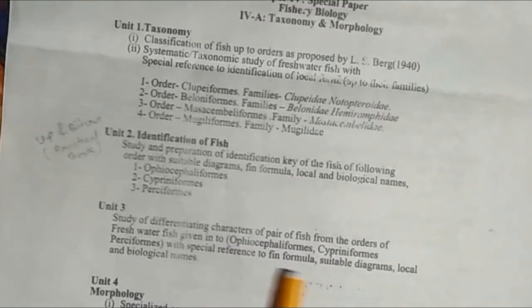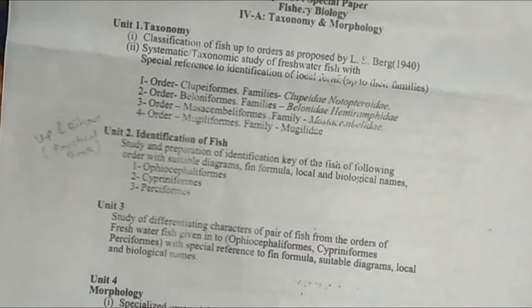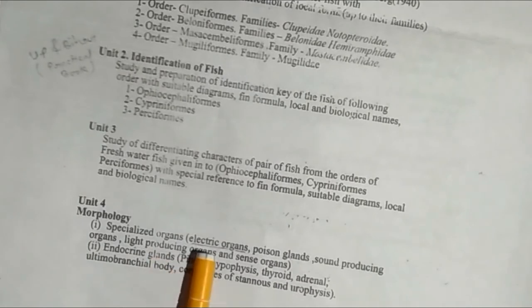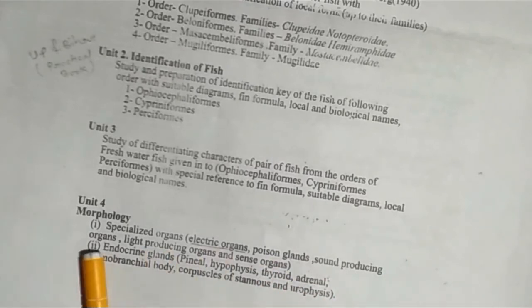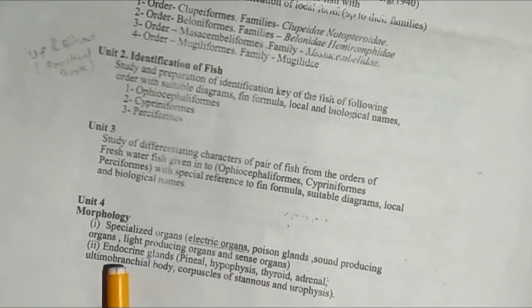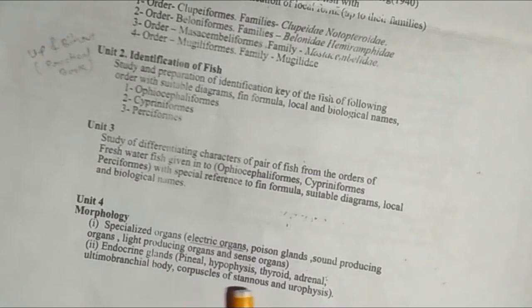Unit Fourth is Morphology. First topic covers specialized organs: electric organs, poison glands, sound-producing organs, light-producing organs, and chromatophores. Second topic covers endocrine glands: pineal, hypophysis, thyroid, adrenal, corpuscles of Stannius, and urophysis.